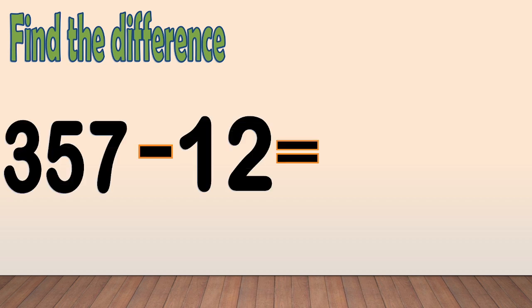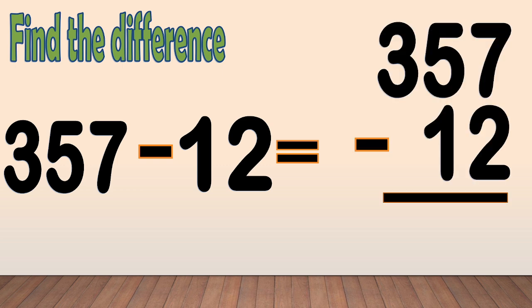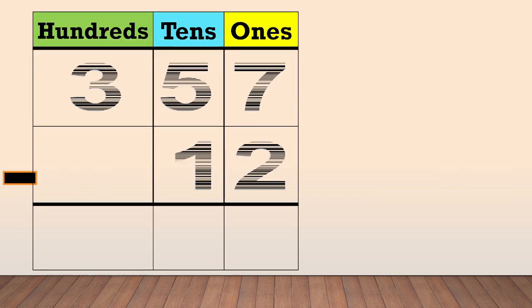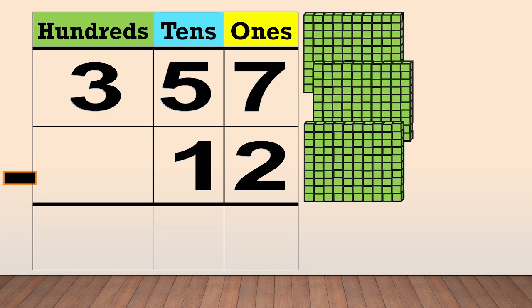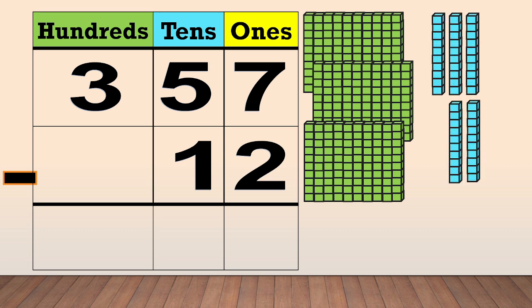Another example. Find the difference. 357 minus 12. First, arrange the numbers in columns. Place the digit of each number in a column based on its place value. 357 has three hundreds, five tens, and seven ones.